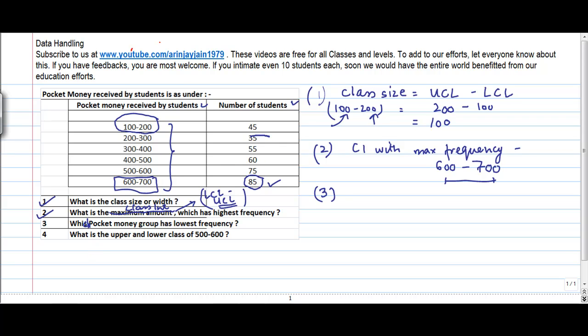So the lowest frequency, if we see, is 35, and this is basically falling within the 200 to 300 group. So the group which has the lowest pocket money is, I guess let me use a different color, the lowest pocket money group is 200 to 300. So the minimum number of students receive money between 200 and 300.